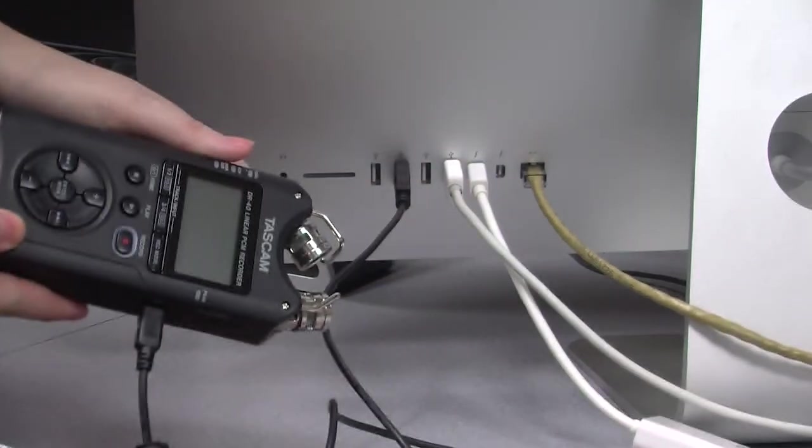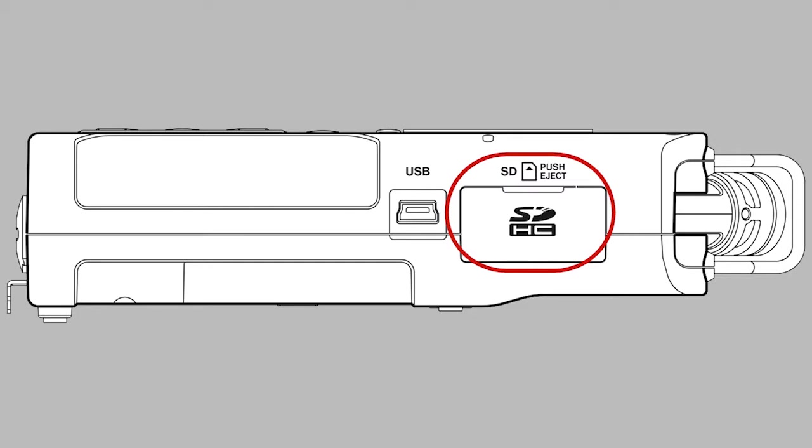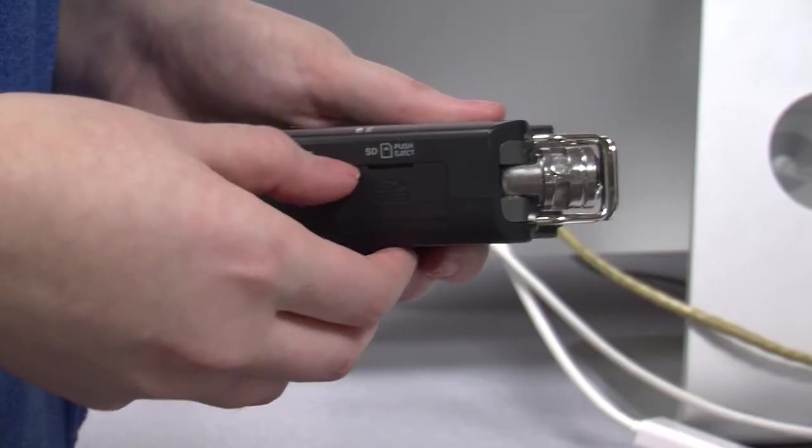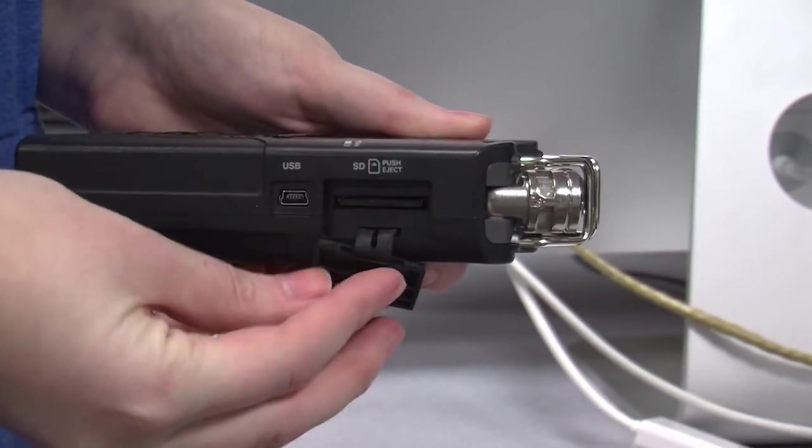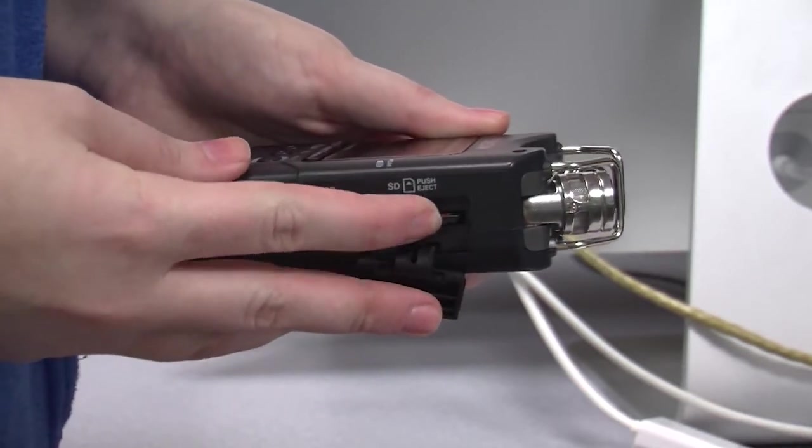The other two methods involve taking the SD card out of the recorder. Open the SD card panel on the right side. Gently press the card and it will pop out part way.